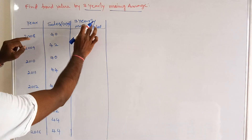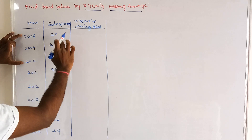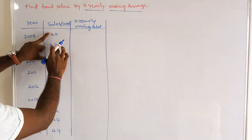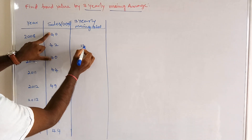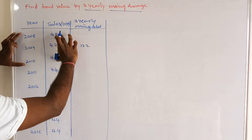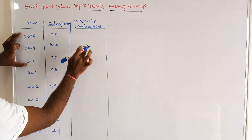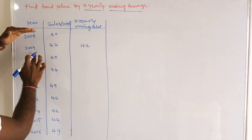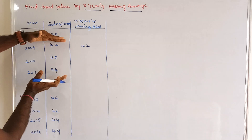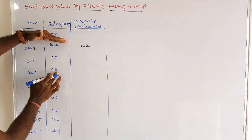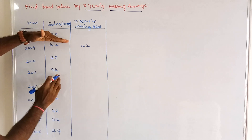The values for years 2008 through 2016 are given along with their sales figures. Three-yearly means we take three years at a time to compute the moving total. The total of the first three years — 42, 40, 40 — is 122. This 122 is placed against the middle year, which is 2009. Then we leave the first year and calculate the total of the next three years.